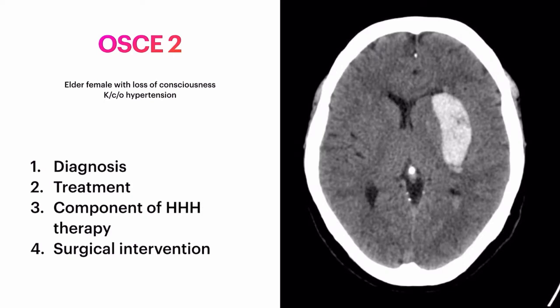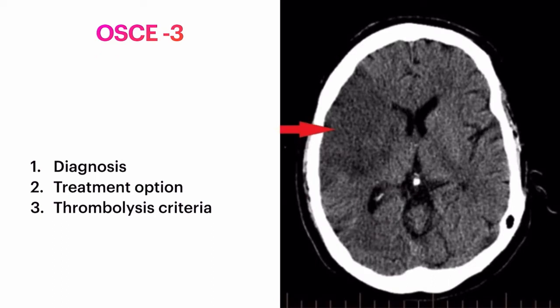Question two: an elderly female came with complaint of loss of consciousness and hypertension. On examination she had a very high BP. The CT scan image is shown on the screen. You have four questions: write down the diagnosis, treatment, components of triple H therapy, surgical intervention, and the most common sites of hemorrhagic bleed.